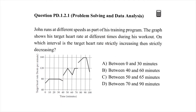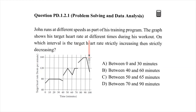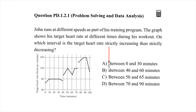Let's get started. John runs at different speeds as part of his training program. The graph shows his target heart rate at different times during his workout. The question asks: on which interval is the target heart rate strictly increasing then strictly decreasing?